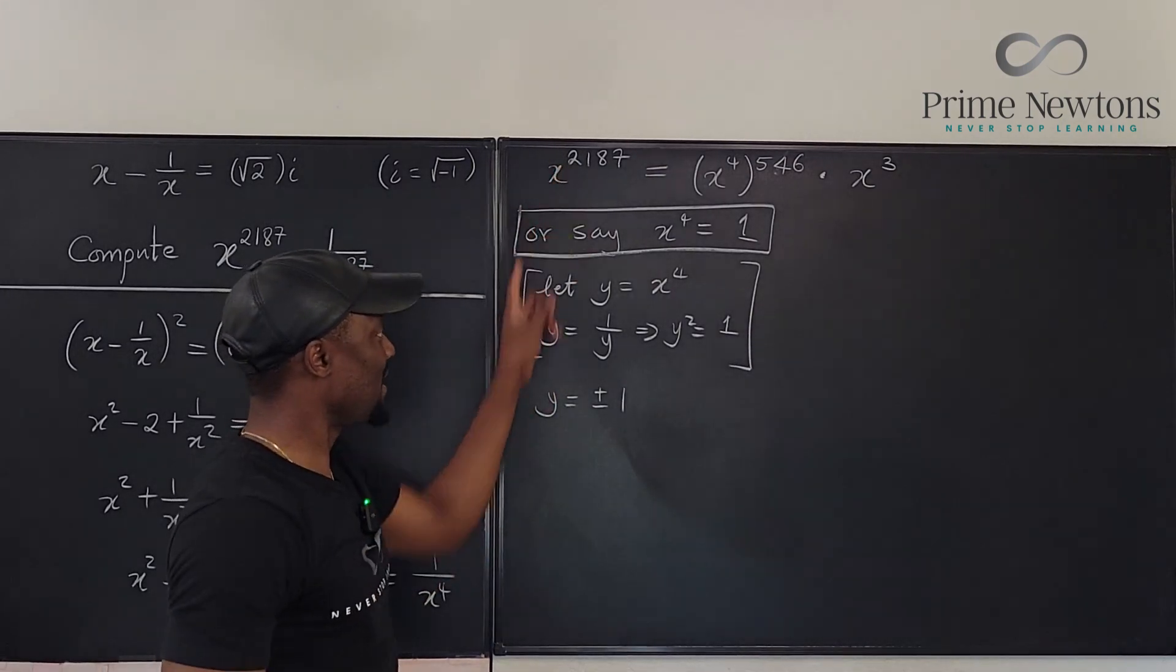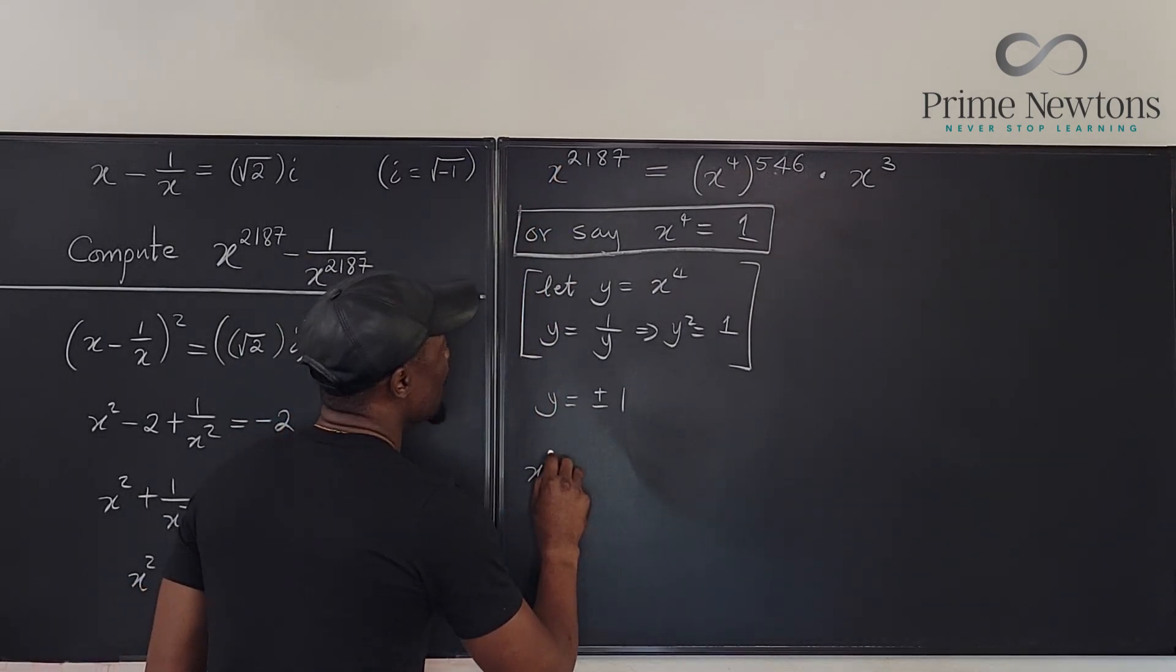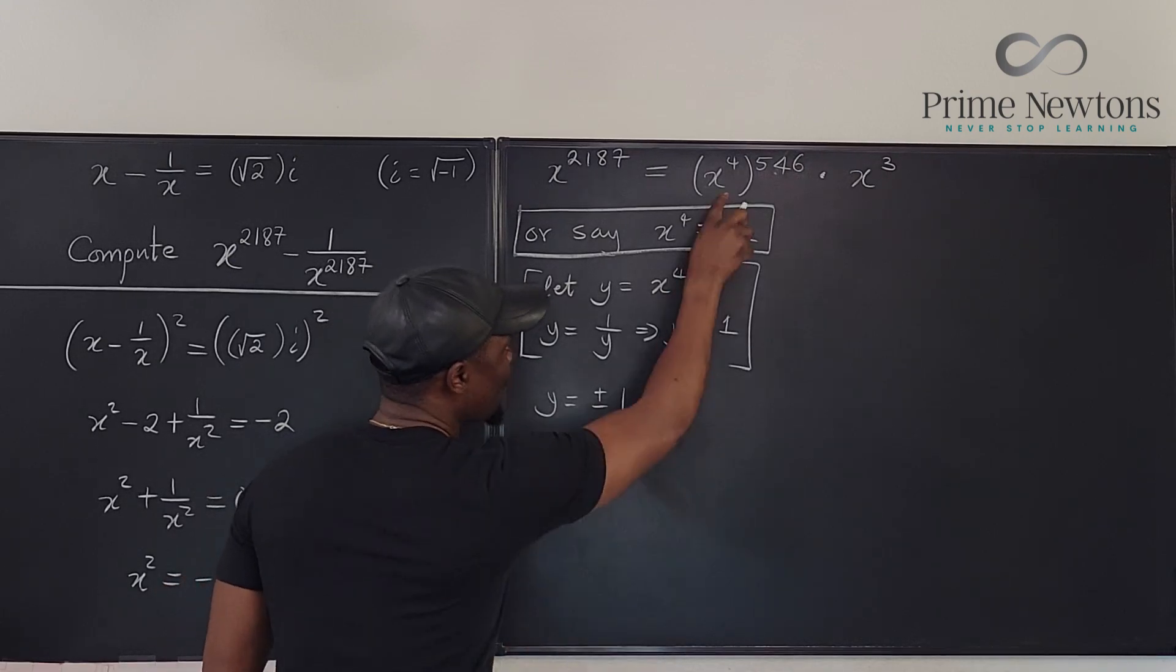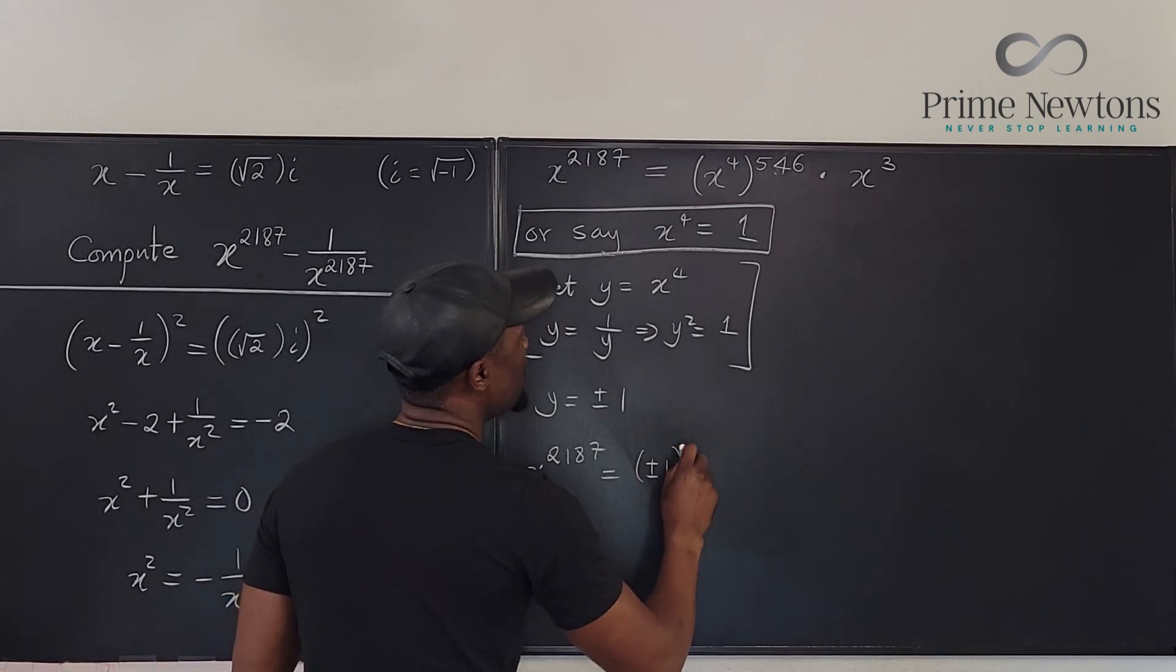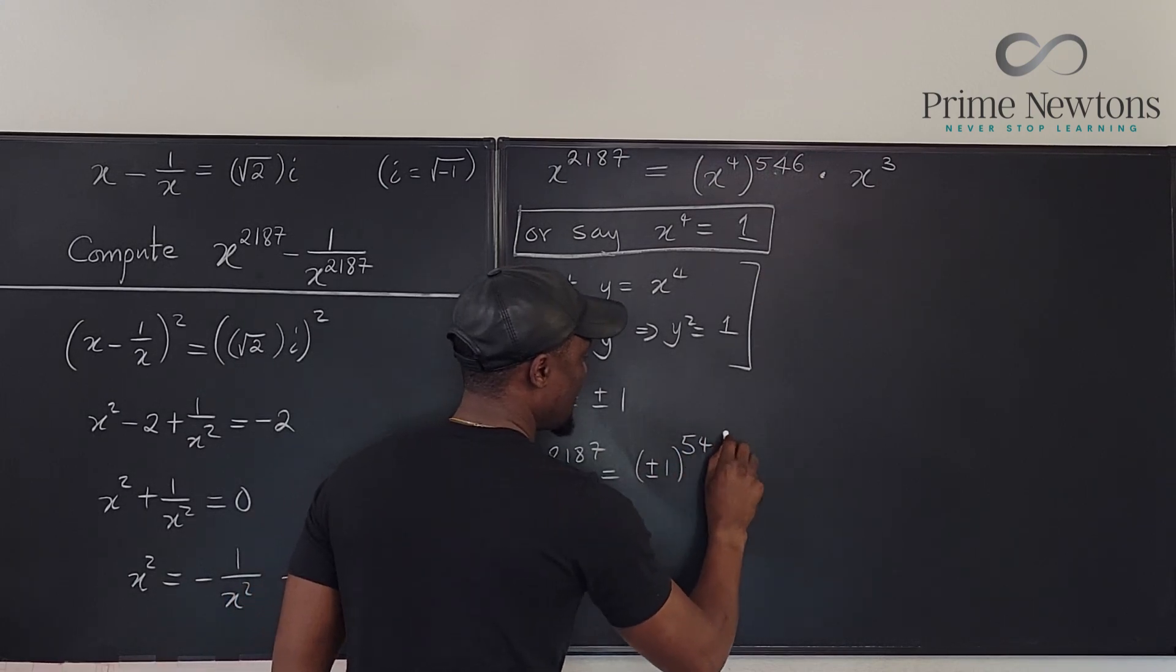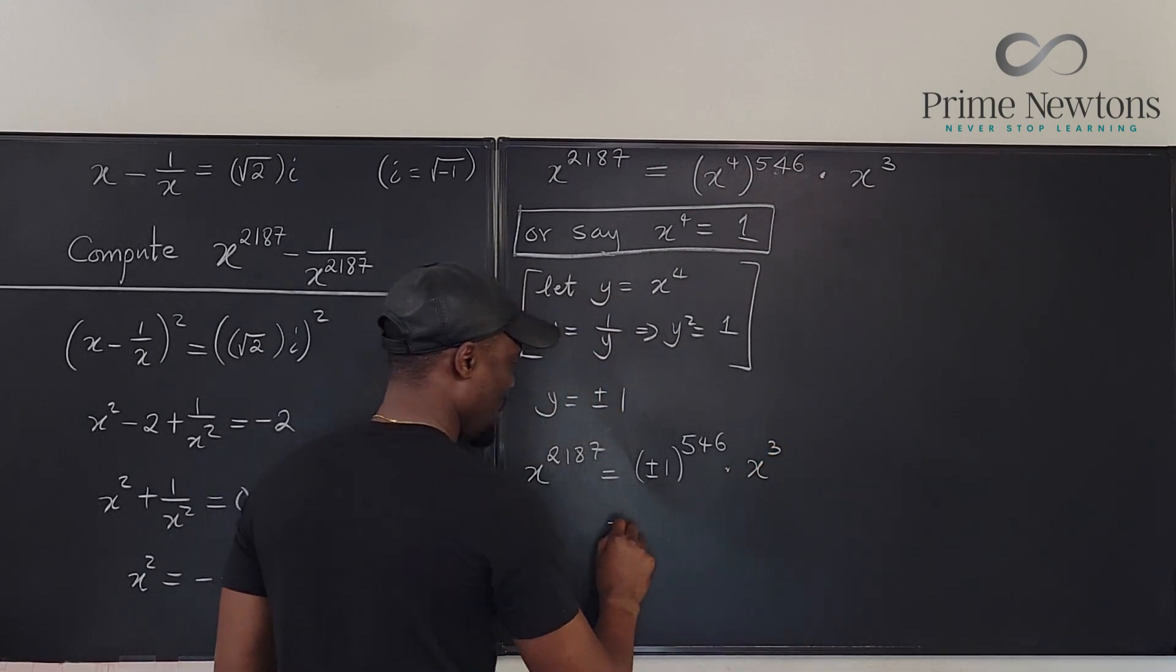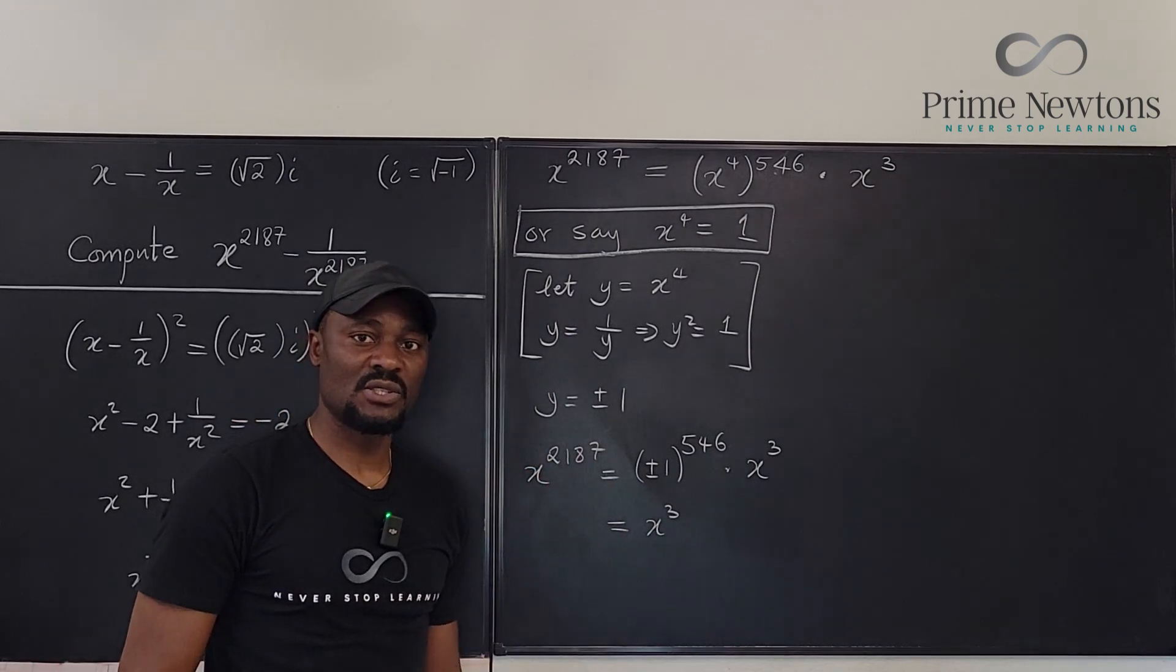So we can come back here and say that x to the 2187 is equal to—let's do this—it's going to be plus or minus 1 raised to power 546 times x cubed, which is equal to 1 times this, which is just x cubed. So anywhere you see 2187, put x cubed.